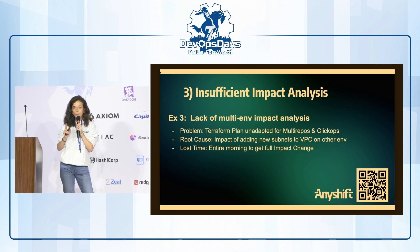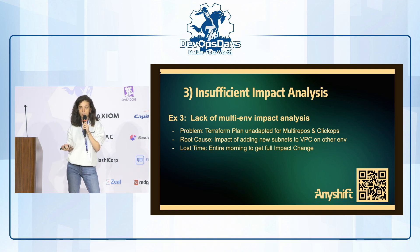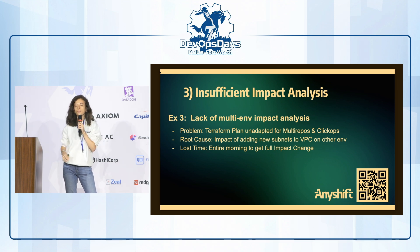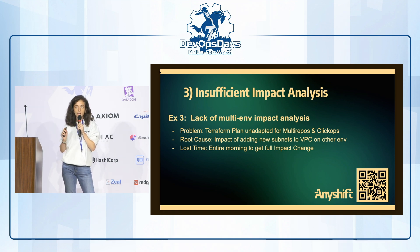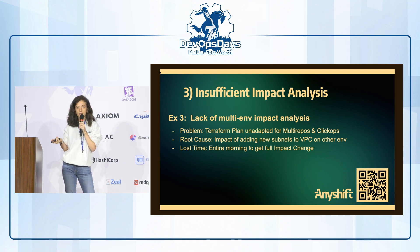The third reason is insufficient impact analysis of your changes. This team was provisioning their infrastructure with Terraform using good practices: one repository for their IAM and accesses, another for their network, and another for their core infrastructure. One issue with Terraform plan is that it won't take into account multiple repositories, so if you change a module, you won't know the impacts on other repositories or resources. Here, an SRE took an entire morning to understand the impacts of adding a new subnet to their VPC.